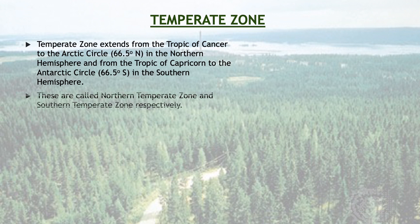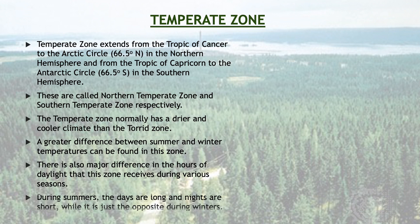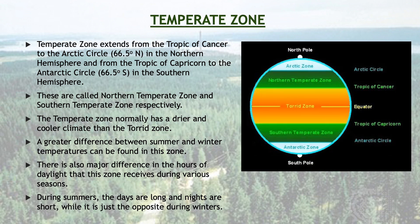Temperate zone extends from the Tropic of Cancer to the Arctic Circle, 66.5 degree north, in the northern hemisphere, and from the Tropic of Capricorn to the Antarctic Circle, 66.5 degree south, in the southern hemisphere. These are called the northern temperate zone and southern temperate zone respectively. The temperate zone normally has a drier and cooler climate than the torrid zone.